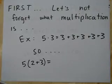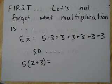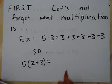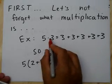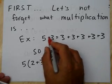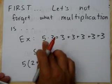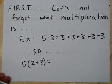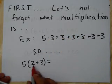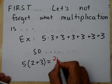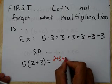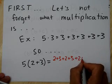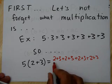Before we start, let's just look at multiplication — let's not forget what multiplication is. Remember that 5 times 3 is just five 3s: 3 plus 3 plus 3 plus 3 plus 3. So if you see 5 times (2 plus 3), it's just (2+3) repeated five times.